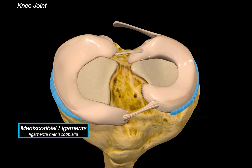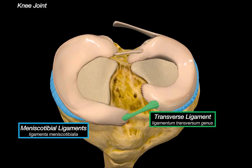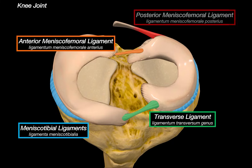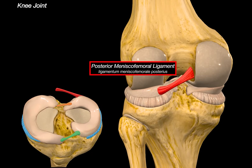The transverse ligament of the knee connects the anterior horn of both menisci and helps them move in unison during knee motion. On the backside, we can see the anterior meniscofemoral ligament, also called the ligament of Humphrey, and its counterpart, the posterior meniscofemoral ligament, also called the ligament of Wrisberg. Both of these extend from the lateral meniscus to the medial femoral condyle.